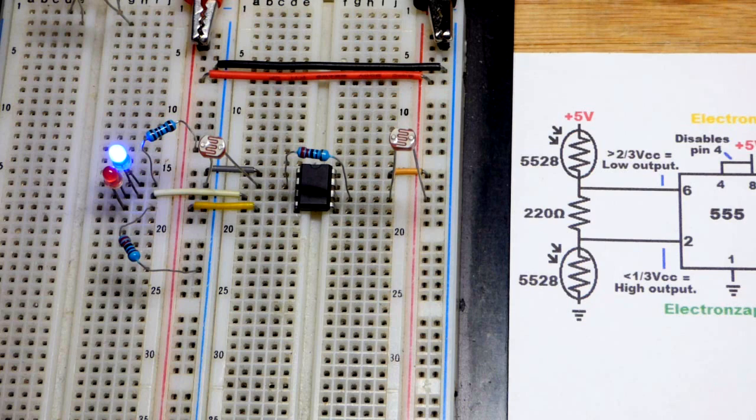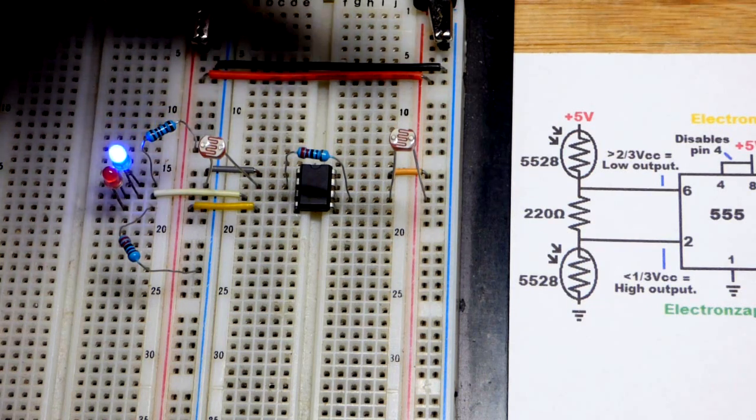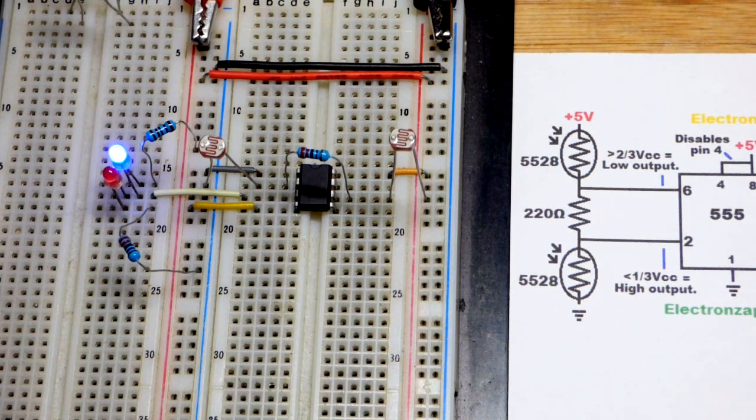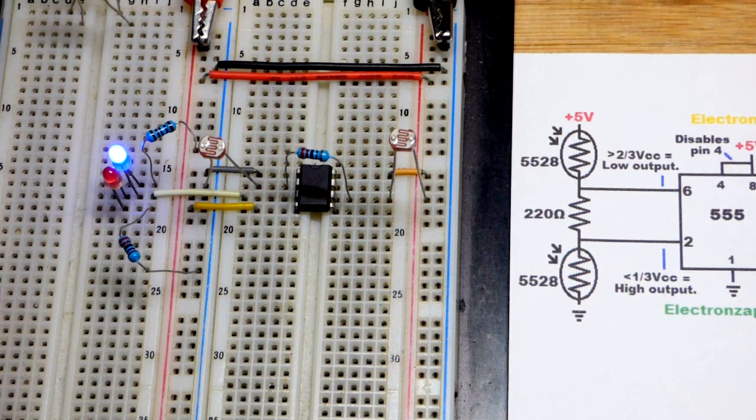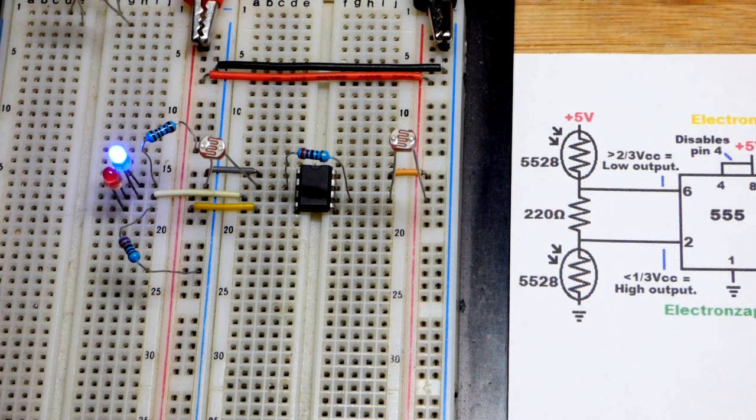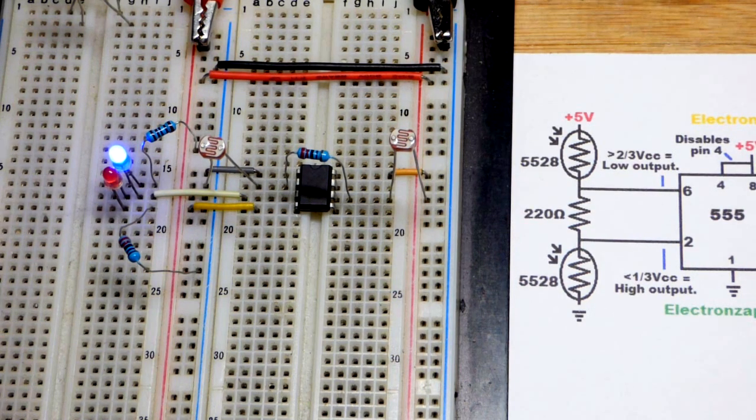Or maybe a solar tracker during the day when the light is brighter on one side than the other, maybe they shift one direction or the other. Of course, that's complex circuitry. This is just the simple sensor part of it. Hopefully that gives you an idea how it might be used.